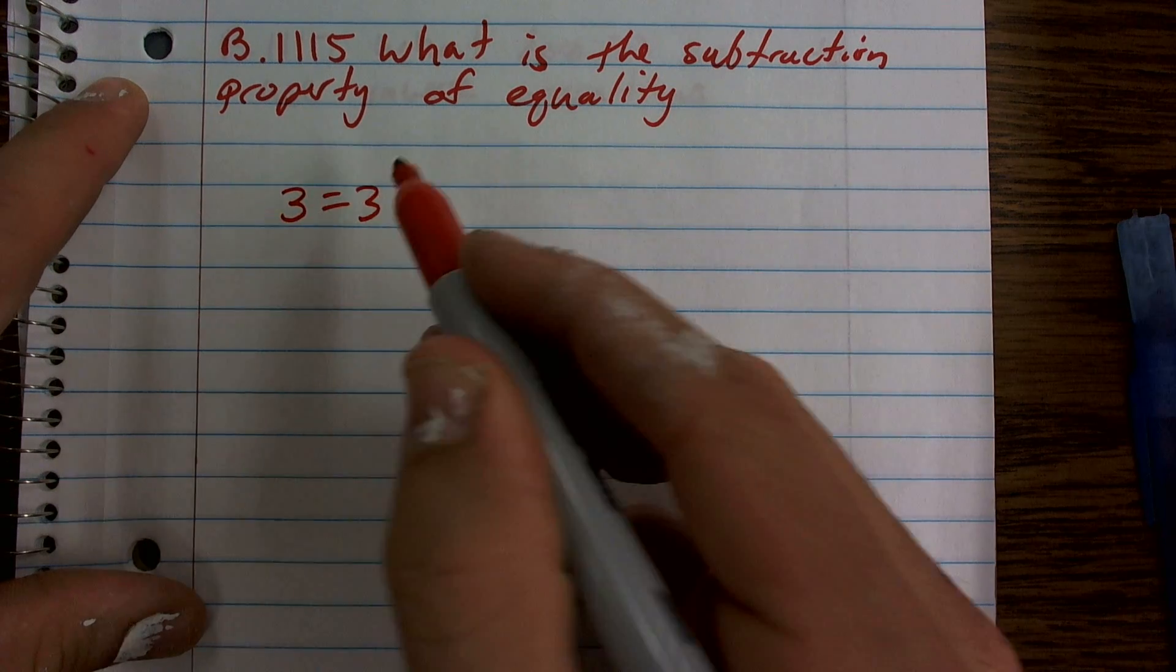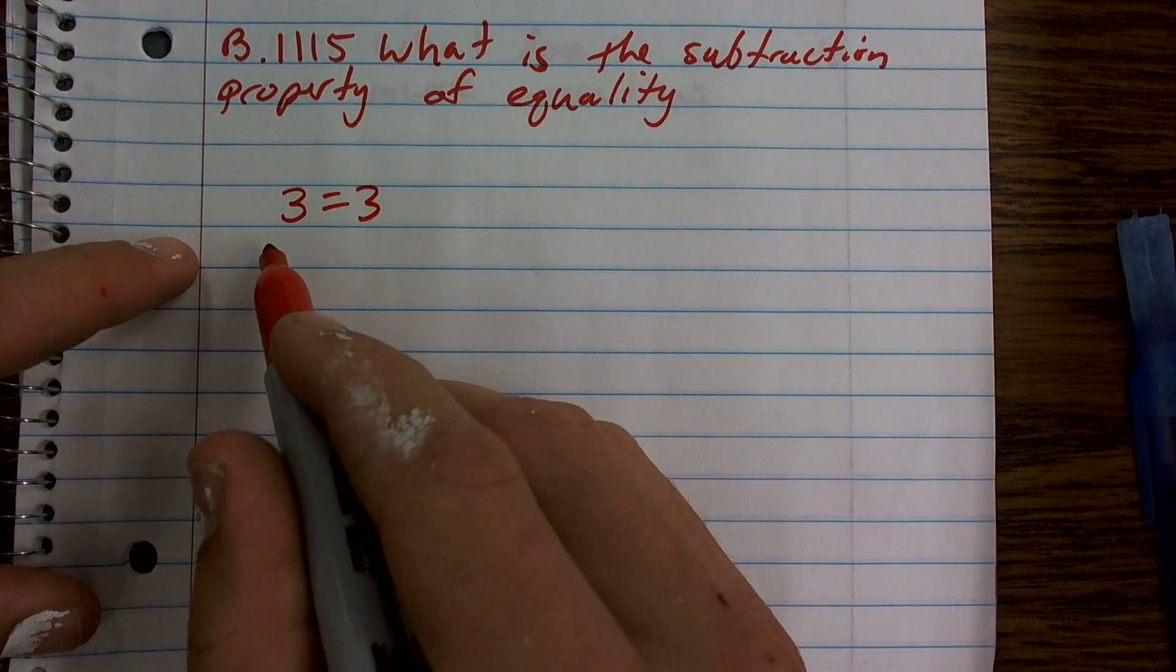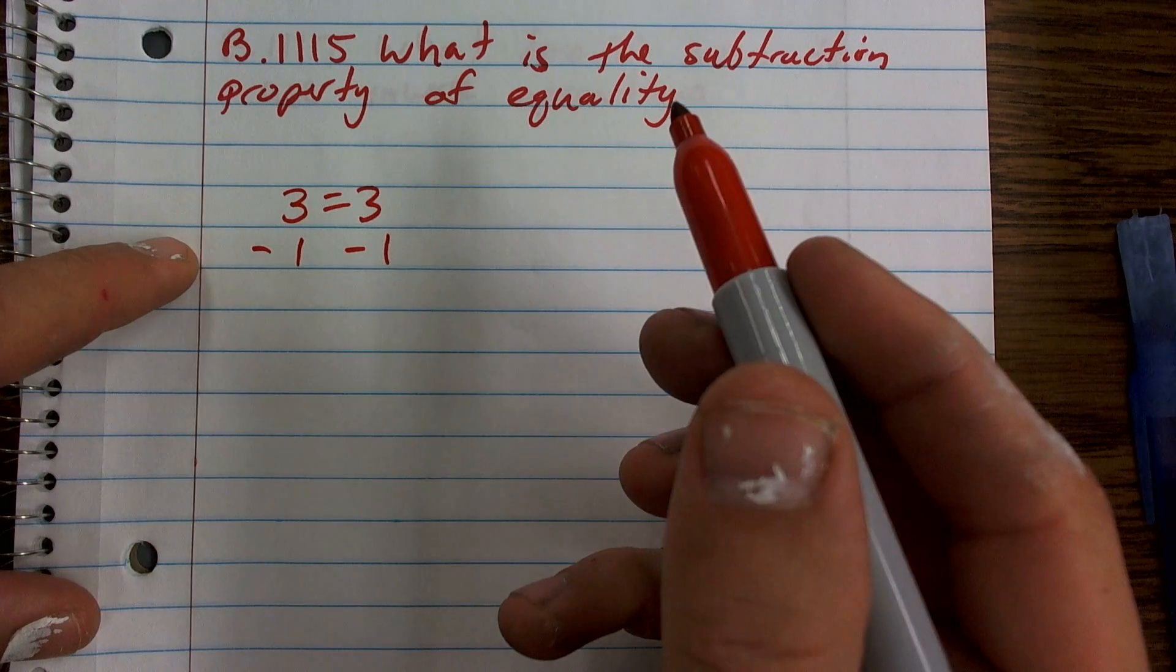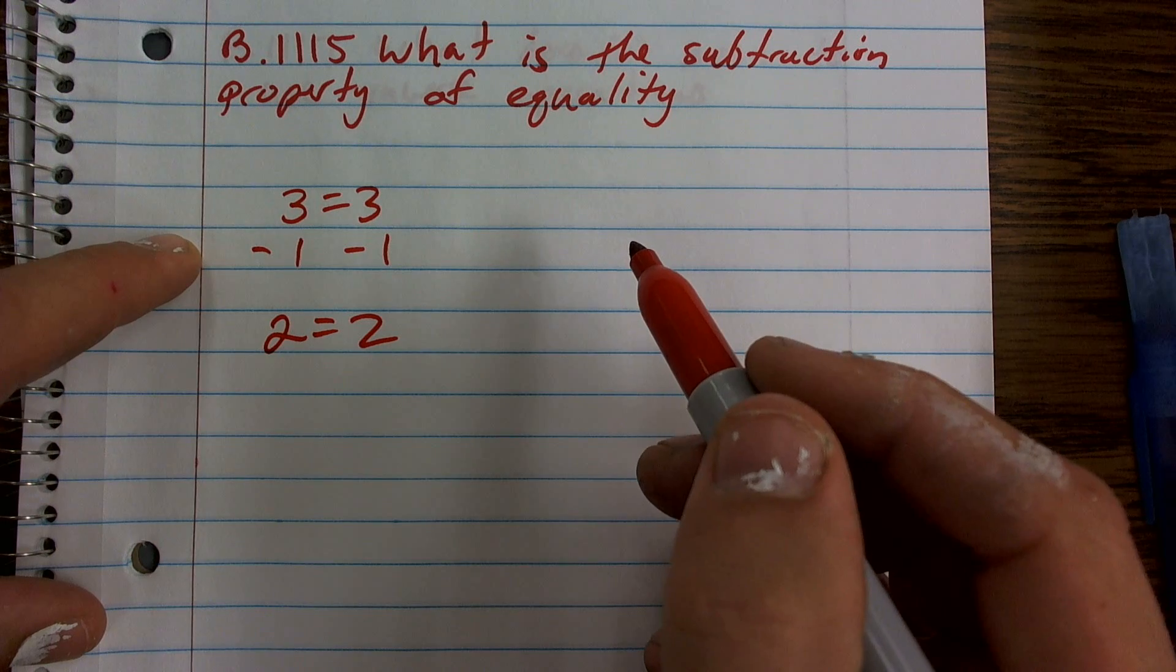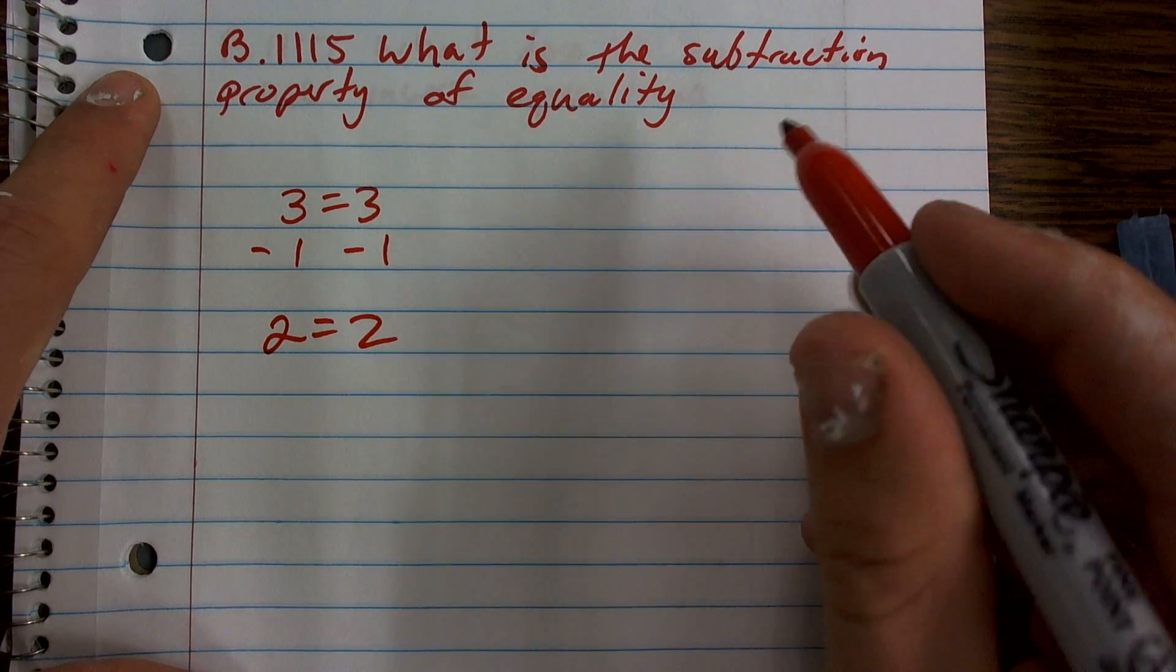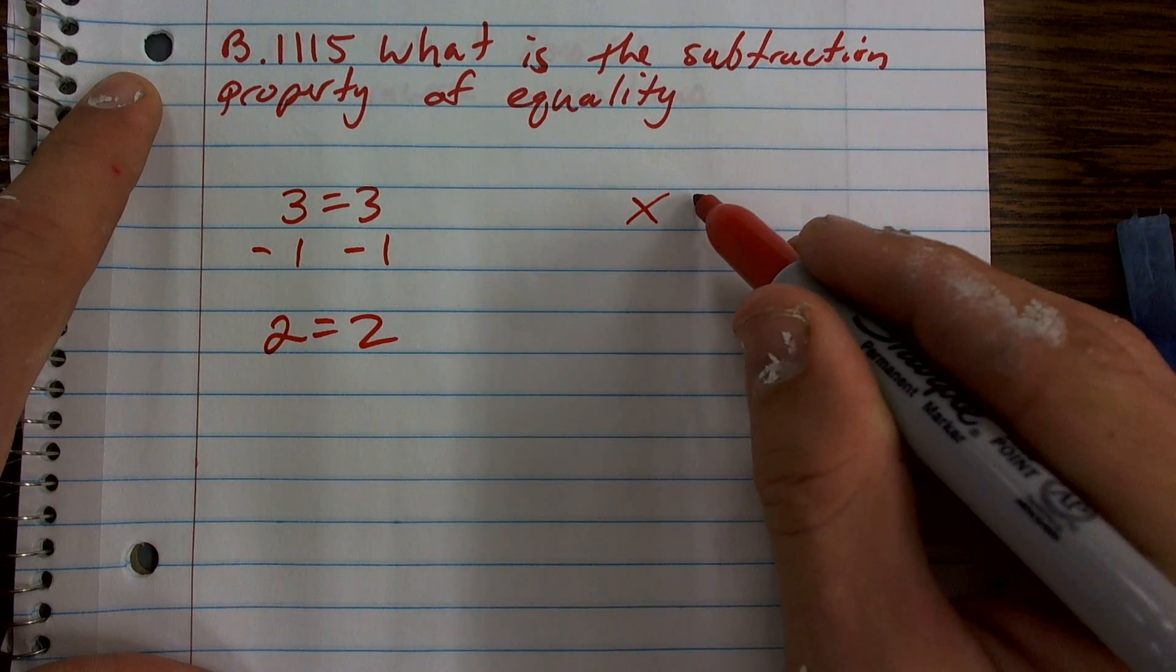Let's say I have 3 equals 3. What I'm saying is if I subtract the same number from both sides, I'm still going to produce an equation that is true. Now let's take a look at just an easy number.